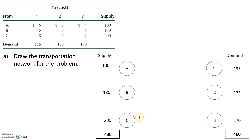I would like to mention that because supply equals demand, this type of transportation problem is called a balanced transportation problem. In a balanced problem, the supply is equal to the demand, so we don't have any shortages or surpluses. If supply was greater than demand, or demand greater than supply, then we would have an unbalanced transportation problem with shortages or surpluses.